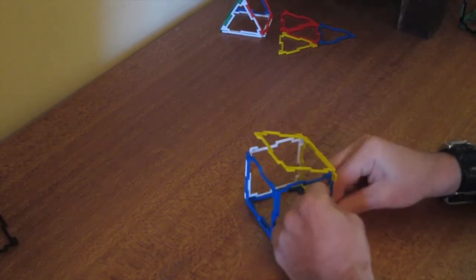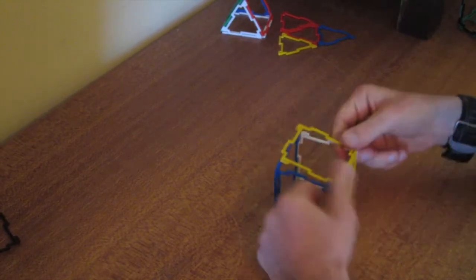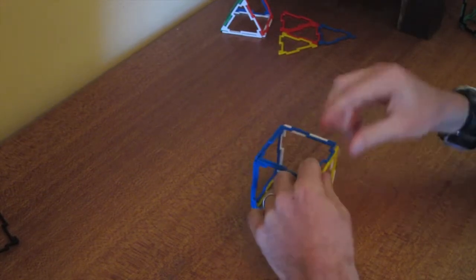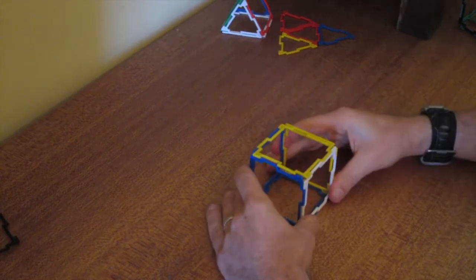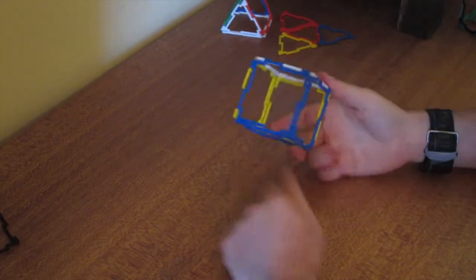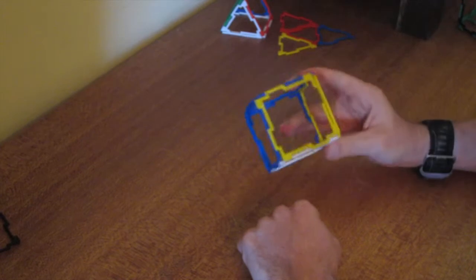With nets, some of them look quite deceiving. At first, I was looking at this net and going, I'm not sure if that will turn into a cube. But then, once I did it, as you can see there, a nice cube.